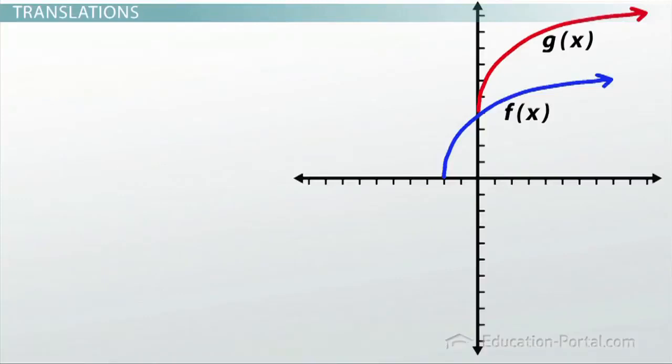So, g looks basically the same as f, only it's been shifted over two to the right and up four. That means we have a minus two on the inside of the function and a plus four on the outside. Therefore, g of x is equal to f of x minus two plus four.